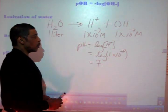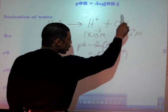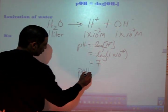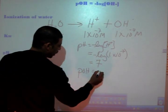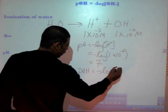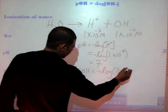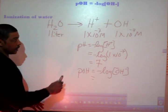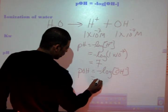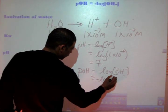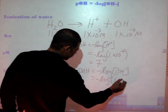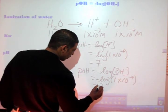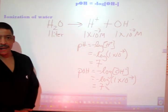Likewise, we may also find the pOH, where pOH is equal to the negative log of the concentration of hydroxide. Therefore, in the case of pure water, the negative log of 1×10⁻⁷ is 7.